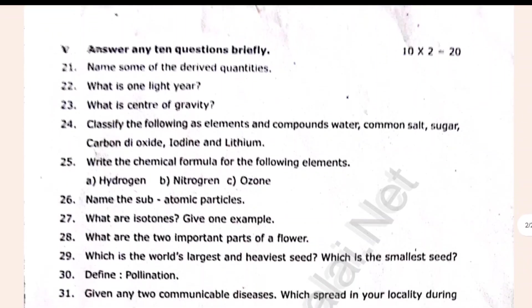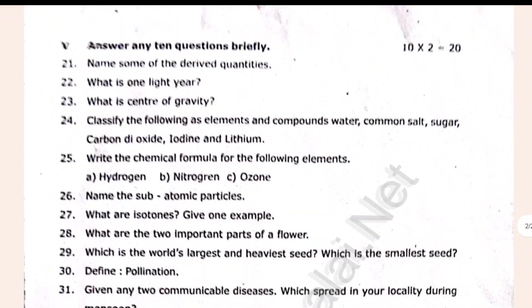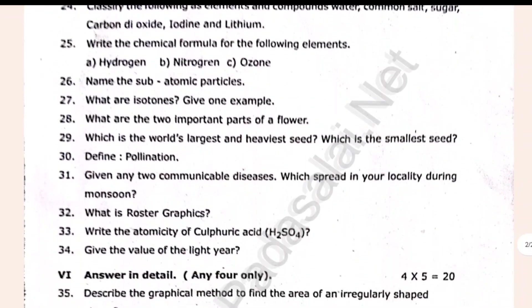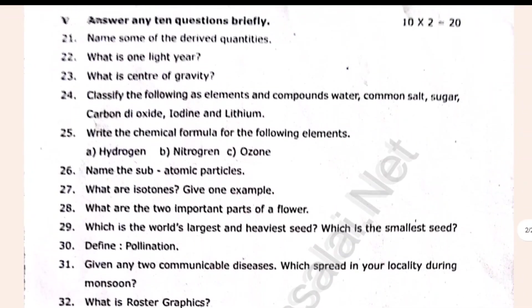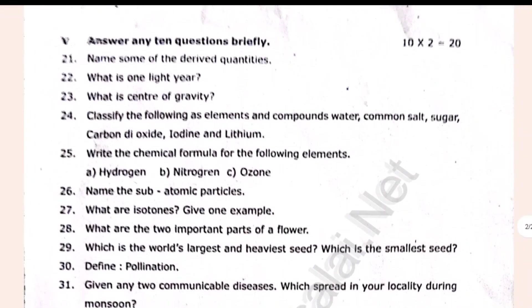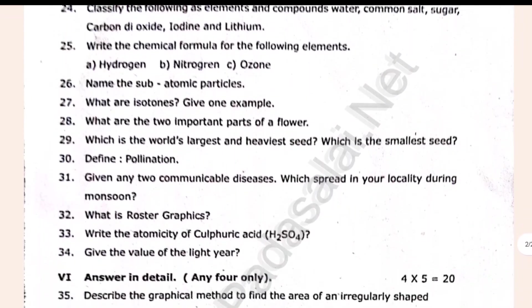You can see two more questions. You can see a total of 14 and 15 questions. You can see 4 choices. Name some of the derived quantities. Which is the speed of light here? What is the center of gravity? This is the same thing.